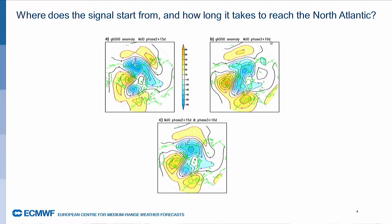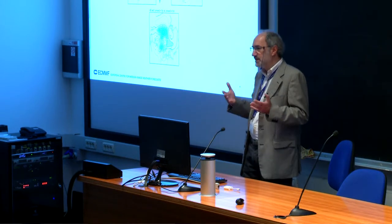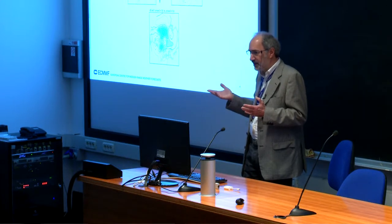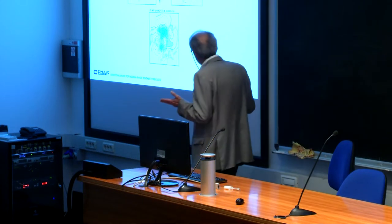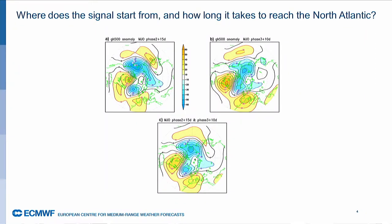If you do the composite 10 days after phase 3, you get a similar wave number 2. Perhaps this center might be a bit less defined, but now the southern part of the North Atlantic oscillation is stronger. You can put them together and get a smoother teleconnection pattern, which is not very different from either of the two. So the question is: where is the signal actually starting from, and how long does it take? What we see in the North Atlantic is actually a combination of signals that come from different parts of the Indian Ocean, with different propagation times, that end up reinforcing each other.